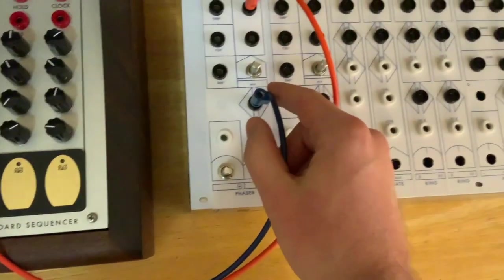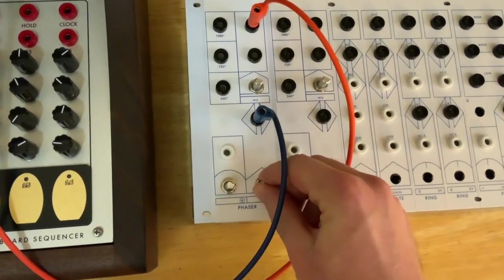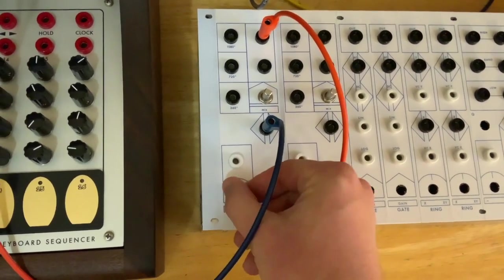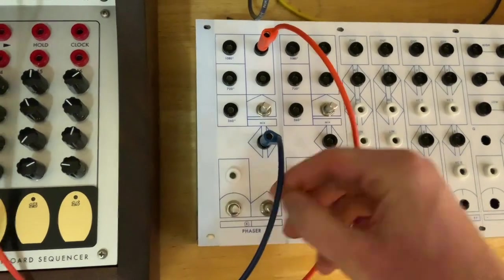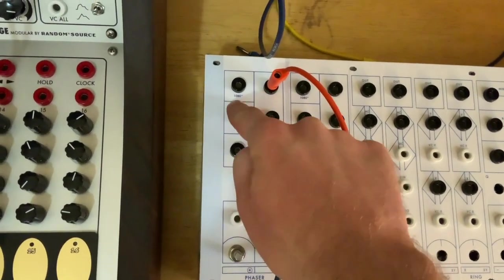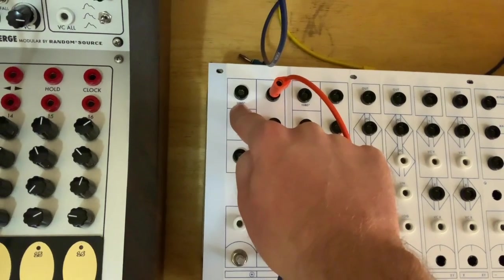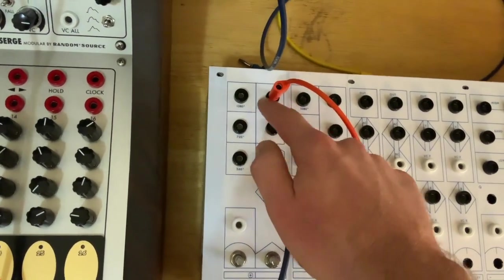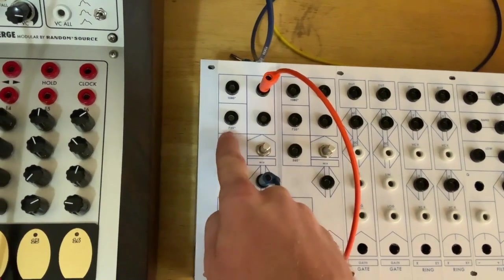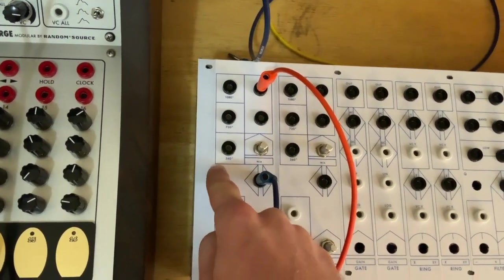What you have here is an input, a knob for the phase shift amount, and a voltage control input with an attenuator. You have a mix knob which mixes the input with the 1080 degree phase shifted output, and you have that mix available at these two identical outputs. You also have 720 and 360 degree outputs.